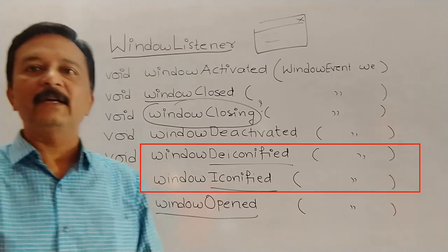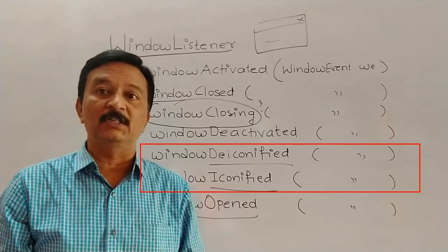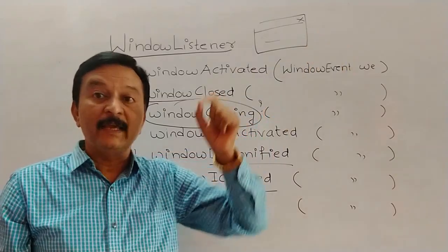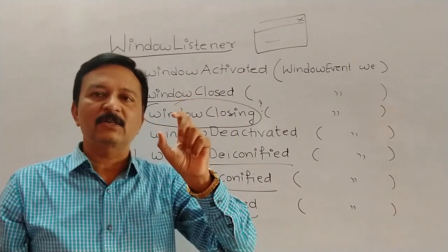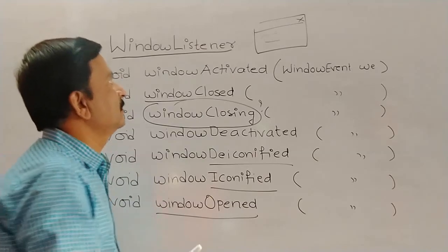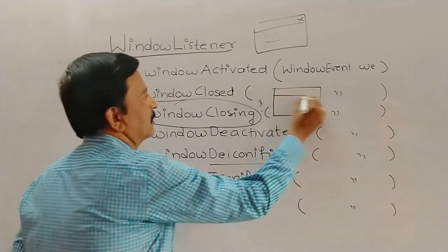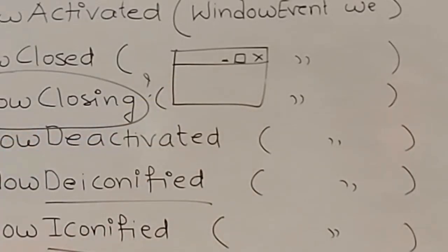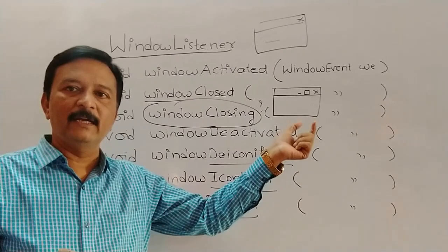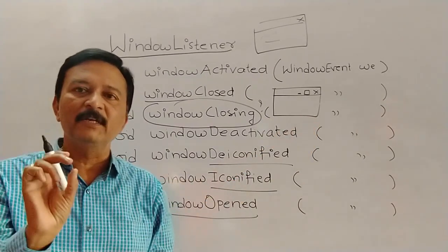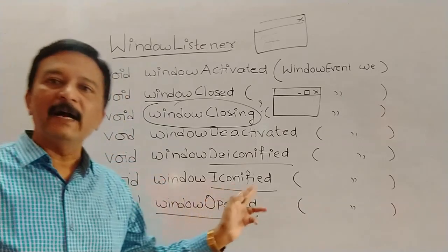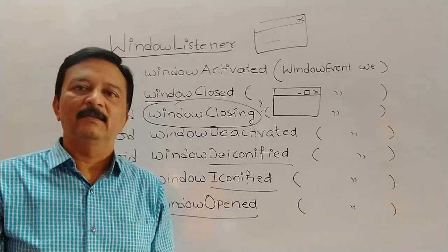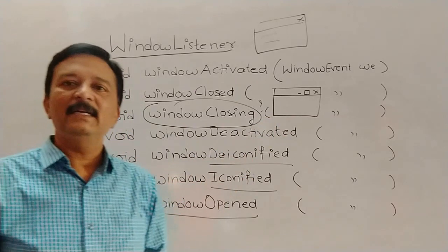Now, what is the meaning of iconified and deiconified? In a Windows application, there are three buttons: minimize, maximize, and close. When you click the minimize button, the application goes to the taskbar — that is called iconified. When you click on the taskbar icon and the window is restored or enlarged, that is called deiconified. So minimize is iconified and restoring from taskbar is deiconified.